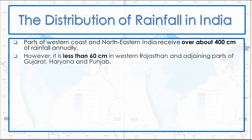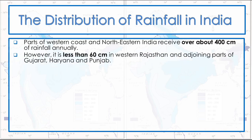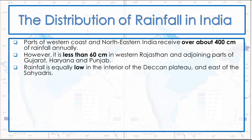However, it is less than 60 cm in Western Rajasthan and adjoining parts of Gujarat, Haryana, and Punjab. Rainfall is equally low in the interior of the Deccan Plateau and east of Sayadiris.